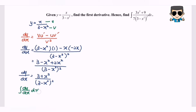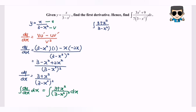Integrating both sides with respect to x: the right-hand side gives the integral of (3 + x²) / (3 - x²)² dx, and the left-hand side gives y + c. Therefore, the integral of (3 + x²) / (3 - x²)² dx = x / (3 - x²) + c.